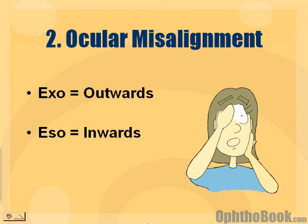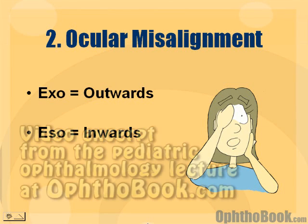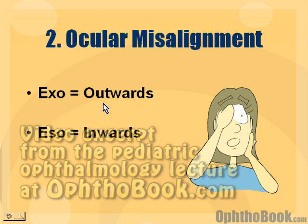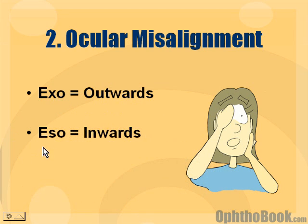Alright, next topic: ocular misalignment. If the eyes aren't aligned properly, you might have an exodeviation — exo just means outwards — or an esodeviation, which is inwards. There's also a hyper and a hypo, meaning up and down.